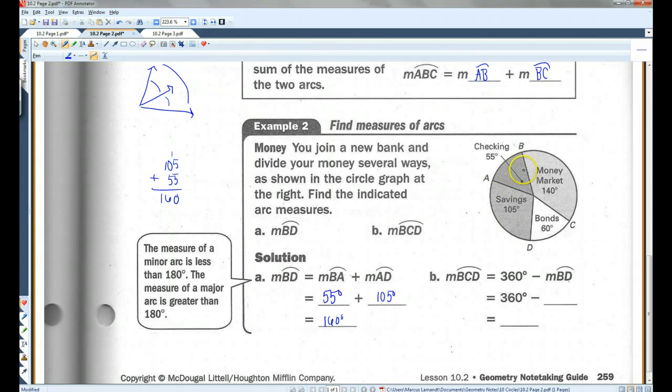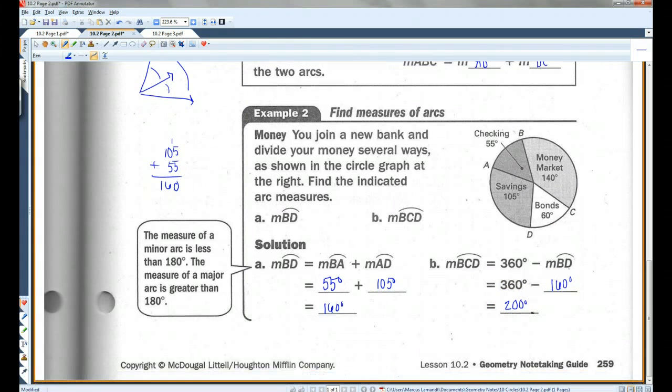Now, BCD, that's the major arc, is going to be 360 minus BD, which was 160. 360 minus 160 is 200. All right, let's go on to page 3.